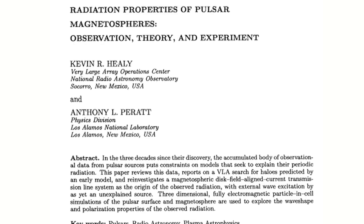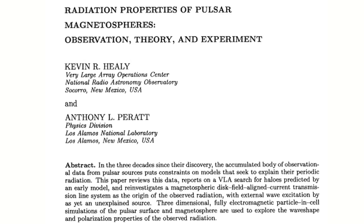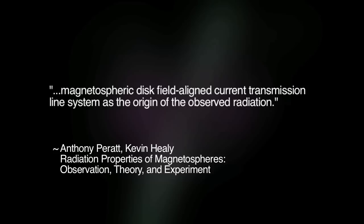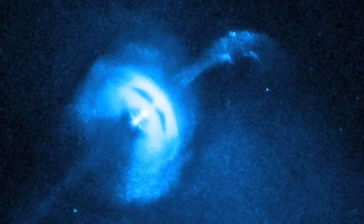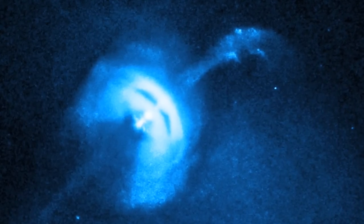Using electromagnetic particle and cell simulations, the team investigated a magnetospheric disk field-aligned current transmission line system as the origin of the observed radiation, with external wave excitation by as yet an unexplained source. This model does not require a rotating object or the lighthouse effect.